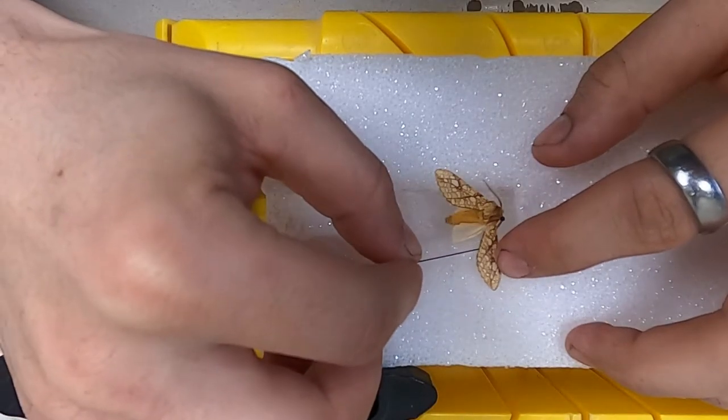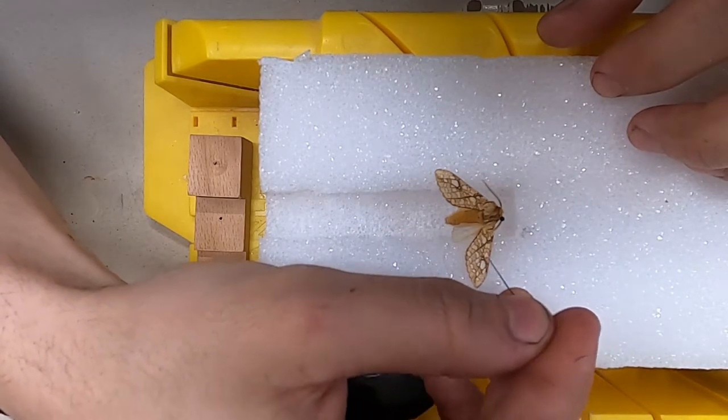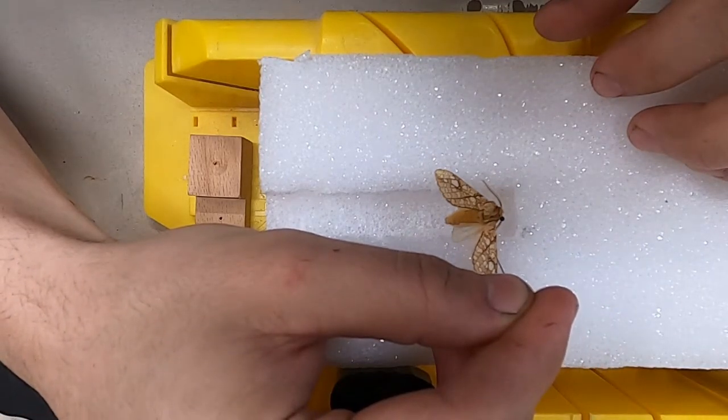The main wing needs to be perpendicular on the bottom edge of the wing to the insect.